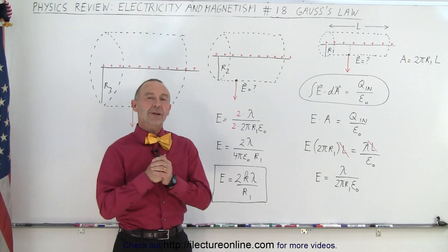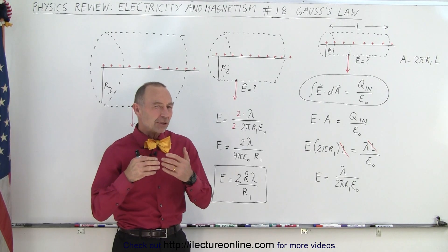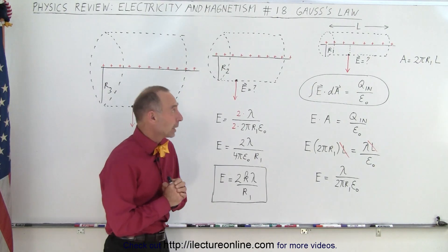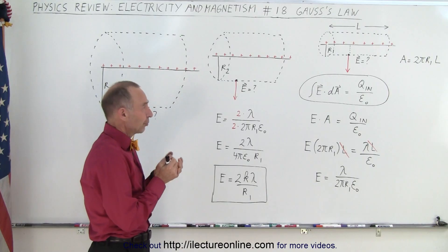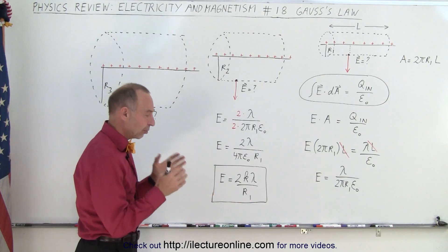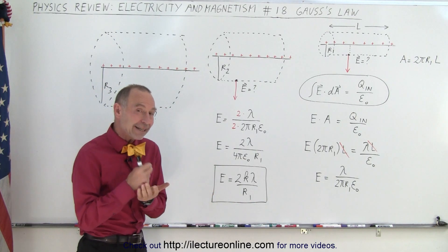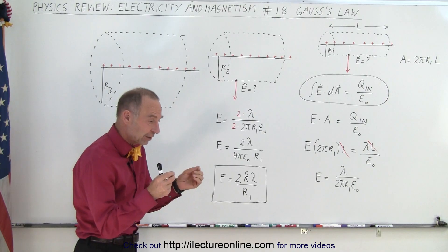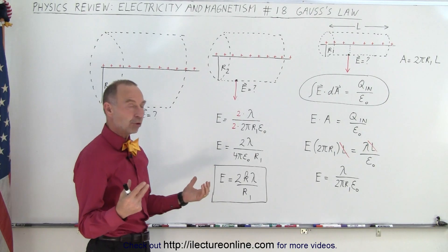Welcome to Electronline. Now let's talk about the Gaussian surface — let's do a quick review. The Gaussian surface is a technique used to very easily find the strength of the electric field at some distance away from some charge distribution.